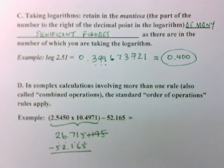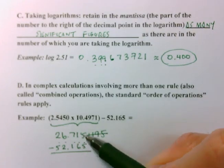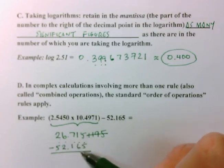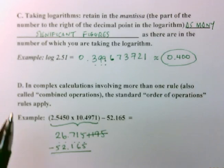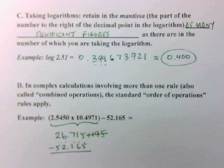Now, remember the rule for addition and subtraction. The rule for addition and subtraction is not interested in how many sig figs you have. It's just interested in where the last sig fig shows up in your least precise number. Both of these numbers are precise out to three places past the decimal. So my answer is going to be reported to three places past the decimal. So if I plug this into my calculator, 26.715 minus 52.165 equals, I get the answer negative 25.45.